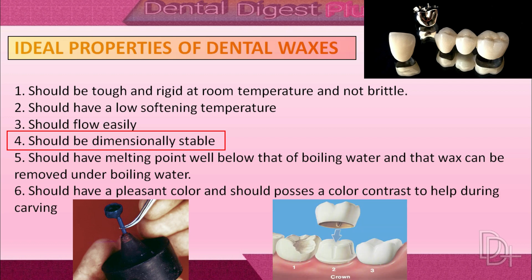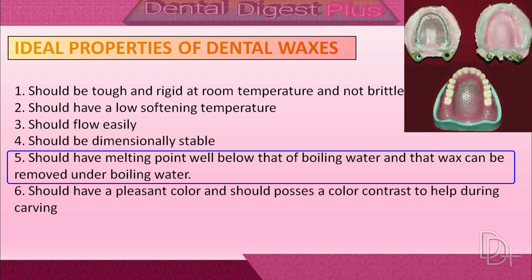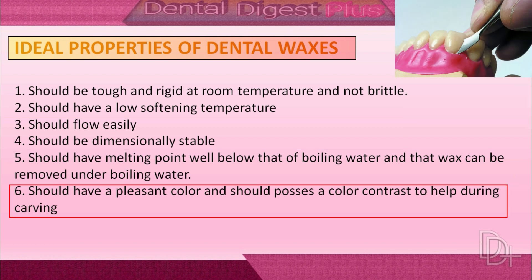Fourth, dental wax should be dimensionally stable so that a restoration made from the wax pattern fits perfectly over the prepared tooth. Fifth, dental wax should have a melting point well below that of boiling water, so the wax can be removed under boiling water, which is necessary during the de-waxing procedure in denture preparation. Sixth, dental wax should have a pleasant color and possess color contrast to help during carving.